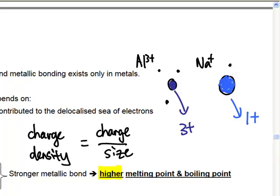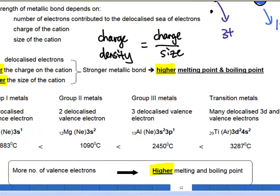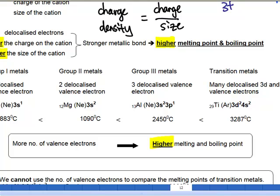So the force of attraction for your aluminum 3+ cations and the electrons is expected to be stronger due to the high charge density compared to your sodium plus which has a weaker charge density. Therefore aluminum will have a higher boiling point compared to sodium and magnesium as well, because magnesium is in group 2.